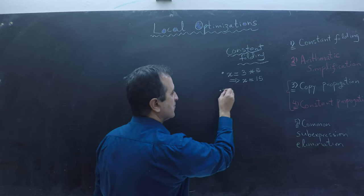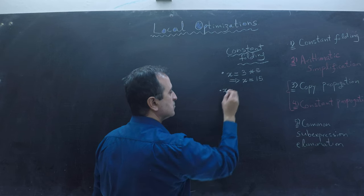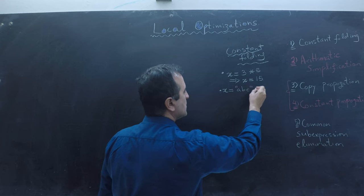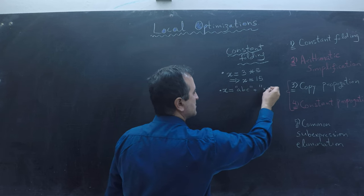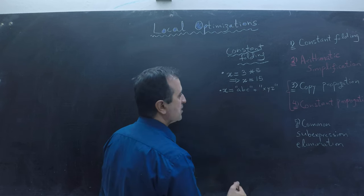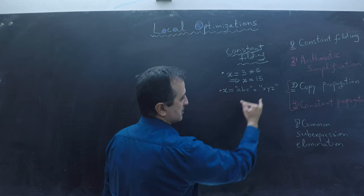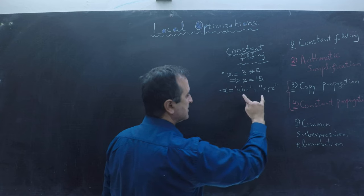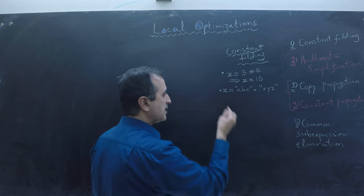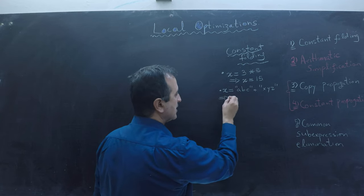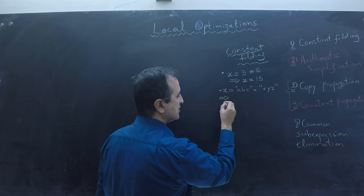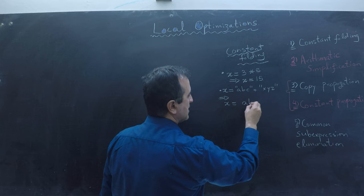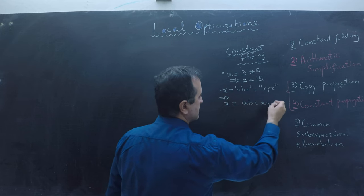Similarly, if I have code x equals to ABC plus XYZ, so we have to concatenate these two strings. Instead of leaving that concatenation at runtime, we will do that at compile time and transform this equation to x equals to ABCXYZ.